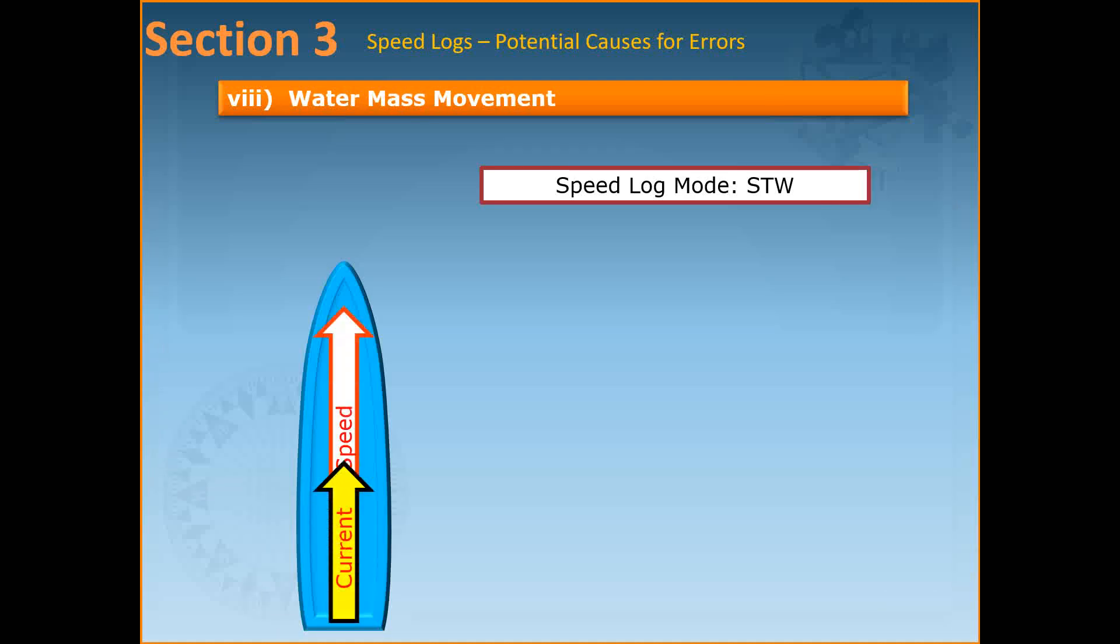And finally we have the water mass movement and this refers to the effects of the currents and tidal streams on the ship's speed. If the current is following the ship, the Doppler log may think that the vessel is doing a much higher speed than what it is, or if the current is coming from in front of the vessel then the Doppler log may think the vessel is slower or faster than what it actually is supposed to be.